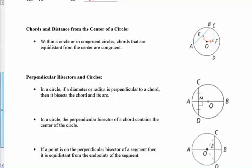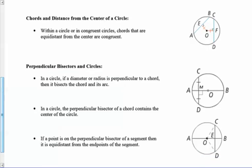Regarding chords: within a circle or in congruent circles, chords that are equidistant from the center are congruent. The distance is perpendicular and when those distances are congruent, all the corresponding pieces must be the same. This is a biconditional — if one of those things is true, then all of them are true.